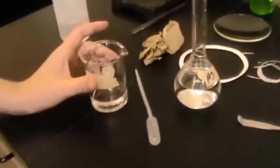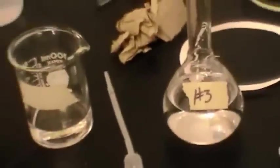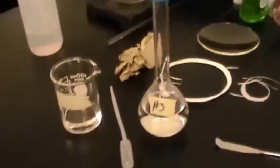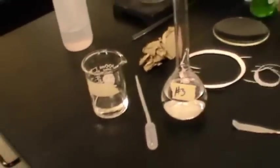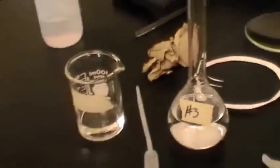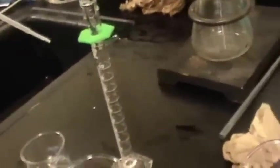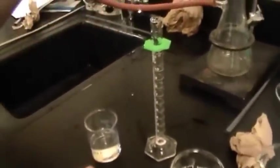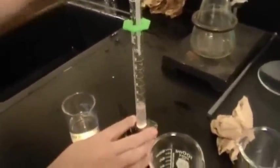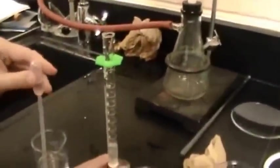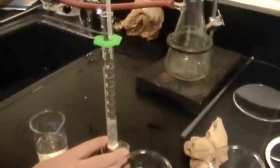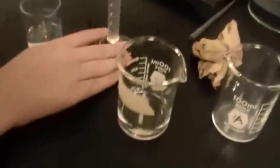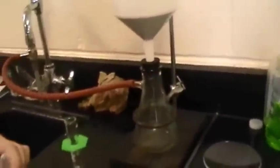This is 20 milliliters of unknown number three. So we're going to add 24 milliliters of sodium bicarbonate. We'll mix it with our unknown number three, and then we will filter it through our vacuum filtration apparatus.